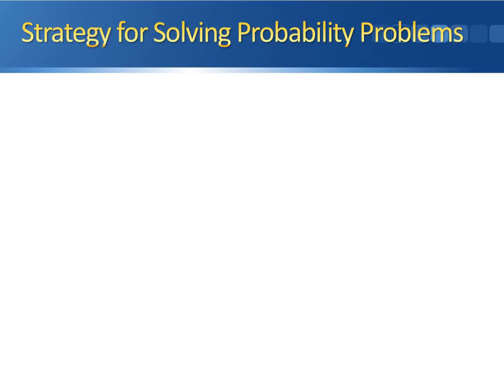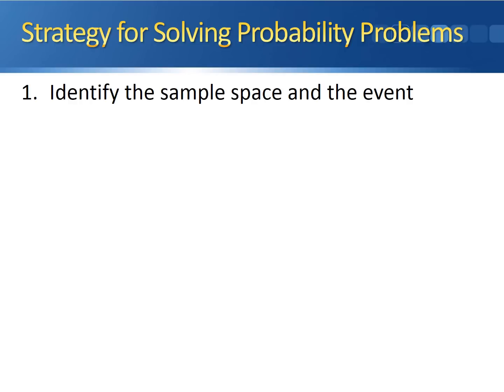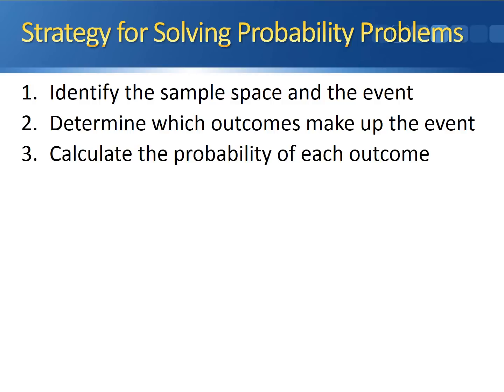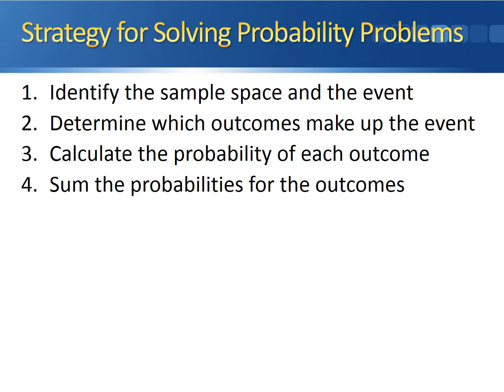At this point, I want to give you a very general strategy for solving probability problems. This is a good place to start, though it won't work for every type of problem we'll look at — different strategies will come into play over the next several weeks. First, identify the sample space and the event you're looking for. Second, determine which outcomes make up the event. Third, calculate the probability of each outcome. And fourth, sum the probabilities for those outcomes to get your overall probability for that event.